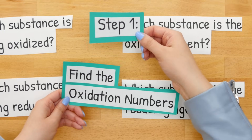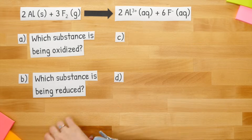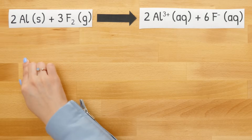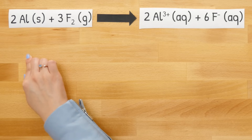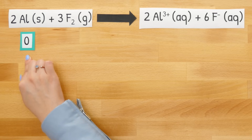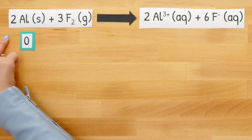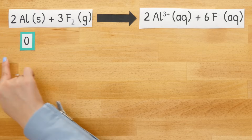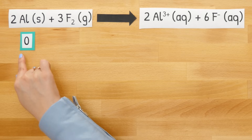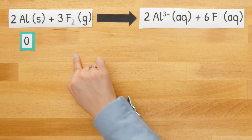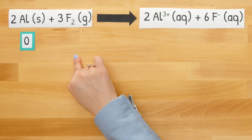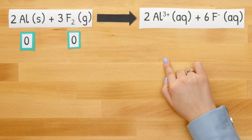Step one is to find the oxidation numbers. Starting with our first reactant, aluminum. Aluminum is one element in its solid state that has an oxidation number of zero. Now this two is only there to balance out this chemical reaction, so yes this still is just one element in its solid state. Moving on to F2. F2 is a diatomic atom. Diatomic atoms have an oxidation number of zero.